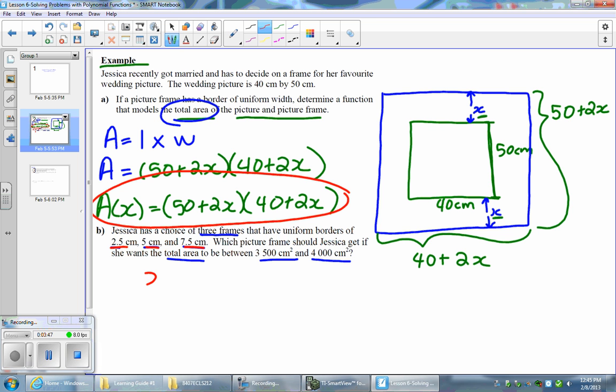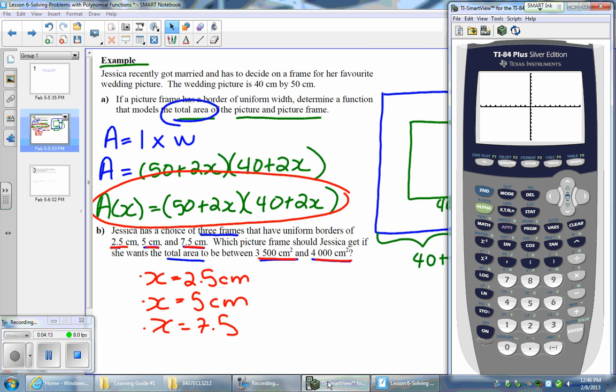So to answer this question we're going to use the function that we produced in part A. These three values represent three different x values, so we have x = 2.5, x = 5, and x = 7.5. In our function we're going to let x be equal to each of these values and whatever value gives me an area between 3,500 and 4,000 is going to be my answer.